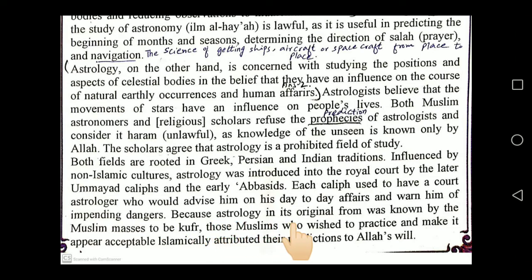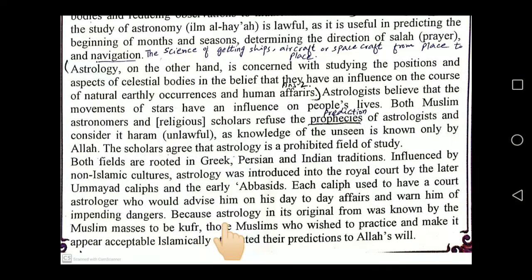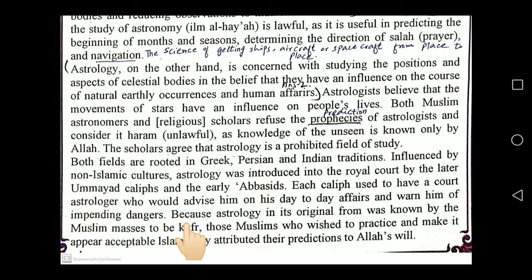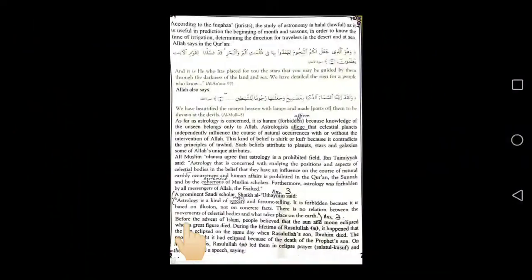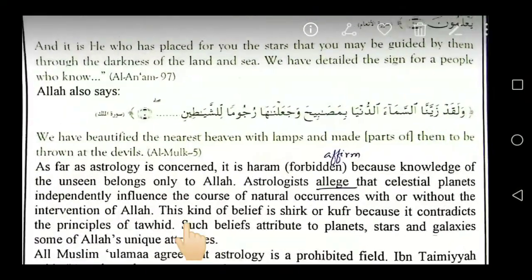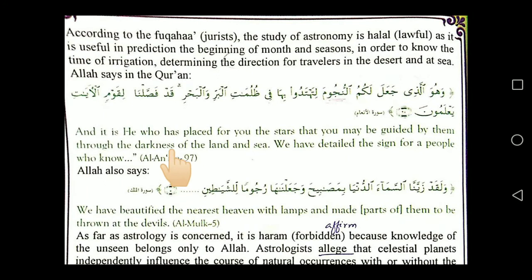Astrology in its original form was known by the Muslim masses to be kufr. Those Muslims who wished to practice it and make it appear acceptable Islamically attributed their predictions to Allah's will. This means they were trying to become partners in the attributes of Allah Almighty.